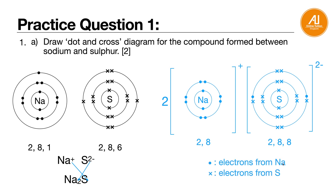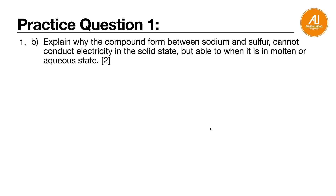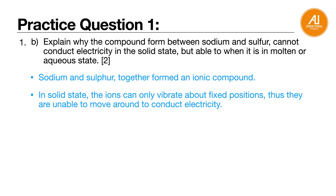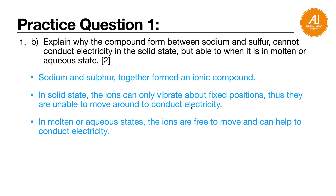For the dot and cross diagram of ionic compounds, make sure you have your square bracket with the charge. The dot represents the electron from sodium, and the cross represents the electron from sulfur. To explain why this compound cannot conduct in solid state but can conduct in molten or aqueous state: in solid state, the ions can only vibrate about a fixed position and are unable to move to conduct electricity. But in molten or aqueous states, the ions are free to move and can conduct electricity.